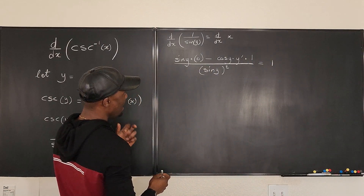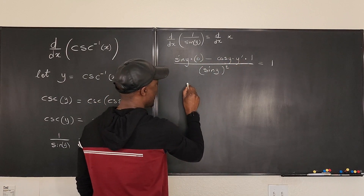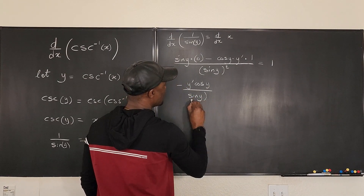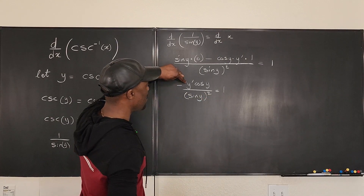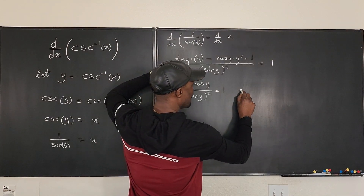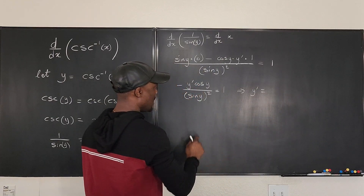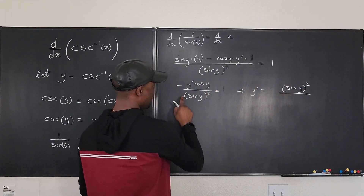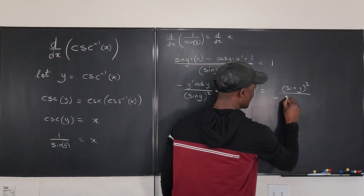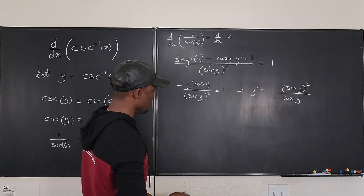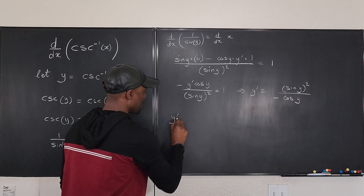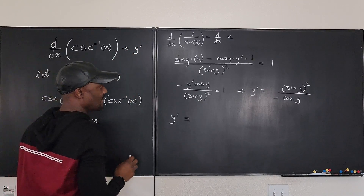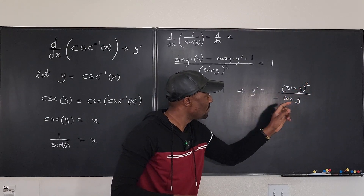Cleaning up: the numerator becomes 0 minus cosine y times y prime, so we have negative y prime cosine y over sine squared y equals 1. Solving for y prime, we get y prime equals sine squared y divided by negative cosine y.